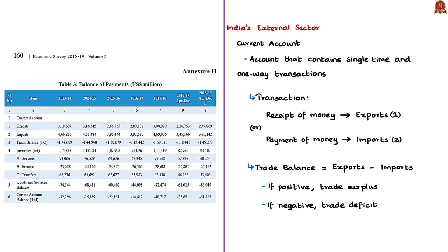You can see this table here. All the exports and imports of India for a particular financial year are recorded in this table in the economic survey, along with a comparison with the previous financial year. Both exports and imports come under the current account in this table. So let us first see what is meant by current account.